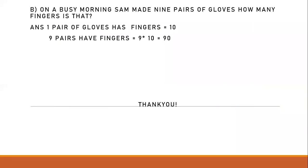The last one: on a busy morning Sam made nine pairs of gloves. How many fingers is that? One pair of gloves means two gloves, so one pair has ten fingers. Nine pairs have nine times ten equals ninety fingers.